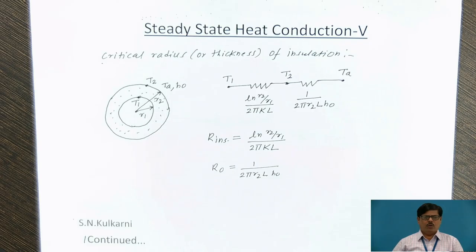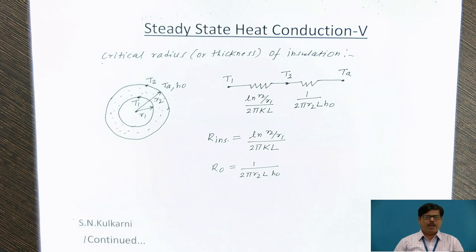When we talk about the critical radius or thickness of insulation, as we are aware that the insulation is used to reduce the heat loss by conduction and convection. So it is very natural to expect that more insulation we put, the lesser will be the heat loss from the surface. But it is not always true that addition of insulation will reduce the heat loss. In case of plain surfaces, it happens that whenever we put more and more insulation, the heat loss from the surface or geometry will decrease.